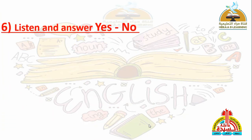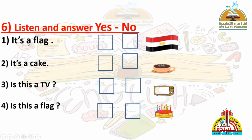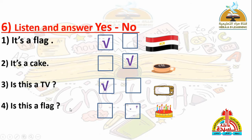Number six: Listen and answer yes or no — استمع وأجب بنعم أو لا. Number one: It's a flag. What can you see? Flag. The answer is yes. Number two: It's a cake. What can you see? Tea. The answer is no. Number three: Is this a TV? What can you see? TV. The answer is yes. Number four: Is this a flag? What can you see? Cake. The answer is no.